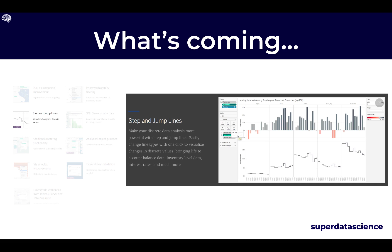Next, they've included step and jump lines — one of my favorites in this release. We are used to normal line graphs using continuous measures, but Tableau has now given us the capability to create step and jump lines based on discrete values. We can now look at things like account balances or interest rates and see what the change has been over a period of time, as you can see in the graph. Super handy.